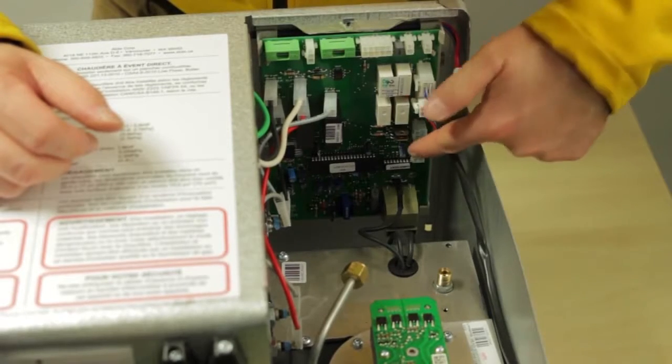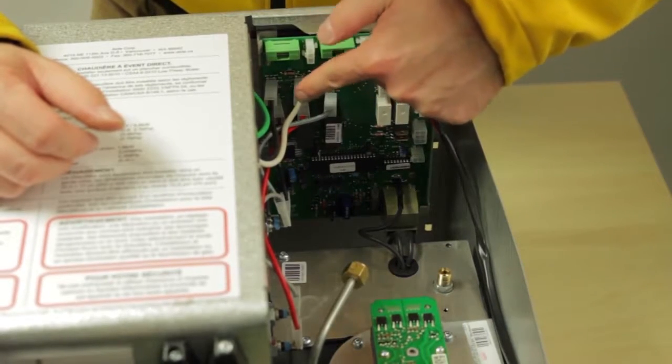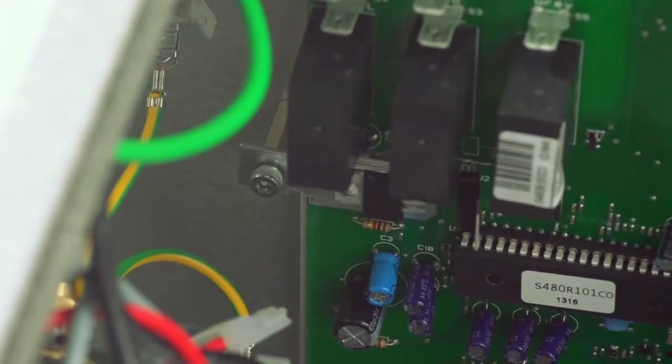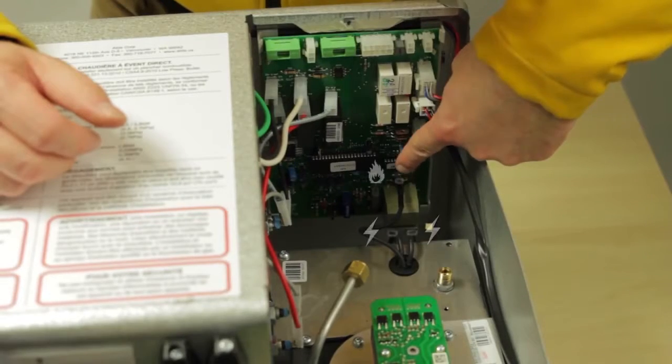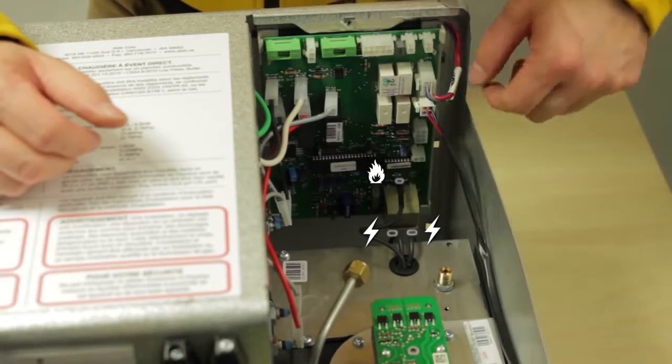To begin with, note we have to remove these plugs, the earth screw here, and also the ignition cable and flame sensor at the bottom.